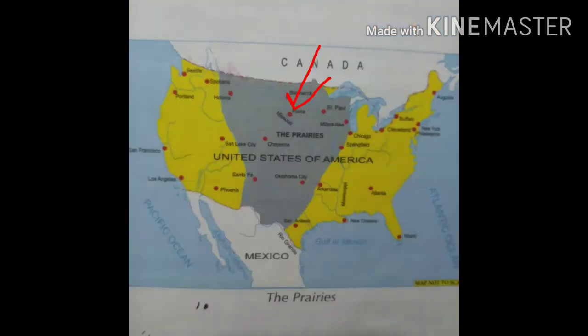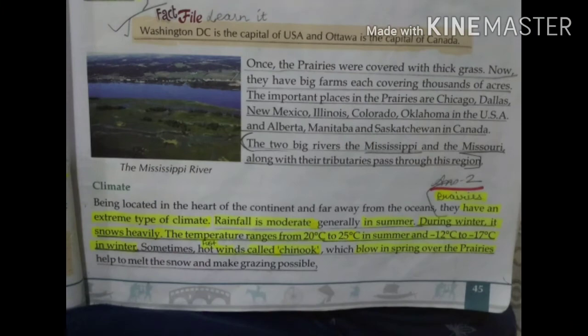Prairies are located in the Northern Hemisphere. From the equator to the North Pole is the Northern Hemisphere. The capital of USA is Washington D.C. — D.C. stands for District of Columbia. And Ottawa is the capital of Canada.